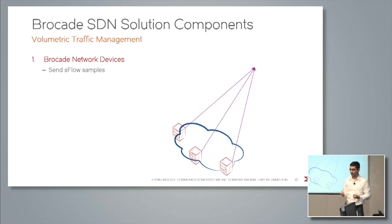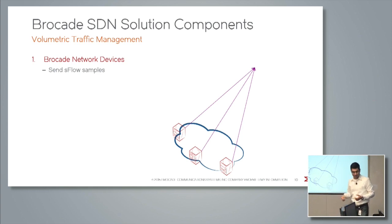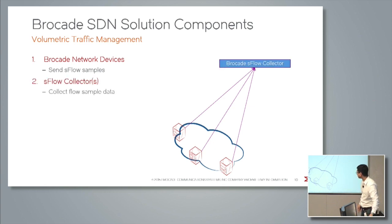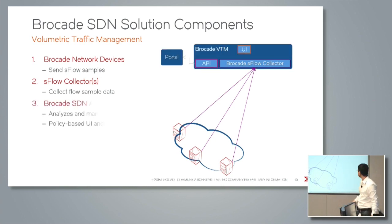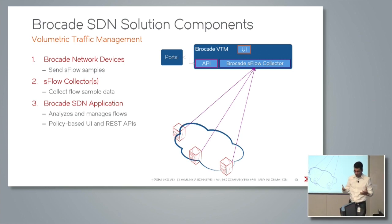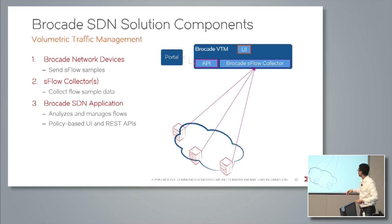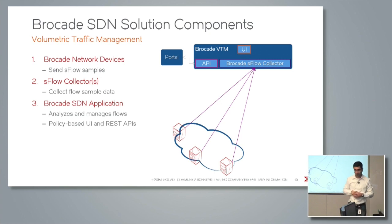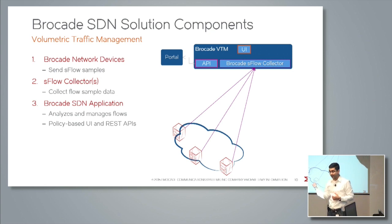SFlow, as you all probably already know, is a packet sampling technology that we have implemented in Brocade devices. So these devices should be capable of sending SFlow samples. Then we have an SFlow collector — we have Brocade's own SFlow collector built into this application. The Brocade VTM application has this SFlow collector and it has APIs as well as a user interface to define policies and management actions. Once these SFlow samples are sent to the Brocade VTM application, VTM analyzes these SFlow samples based on the policies an end user has defined to detect and gain visibility into large flows.